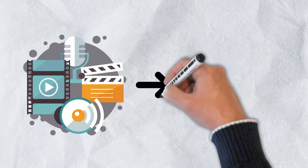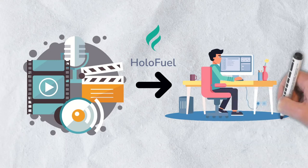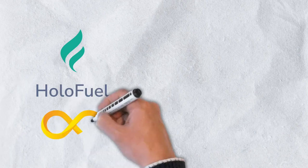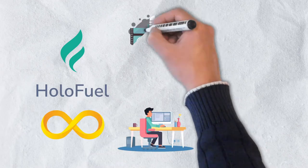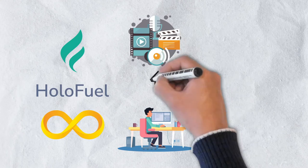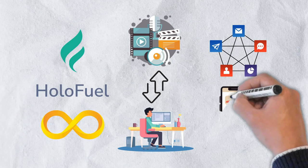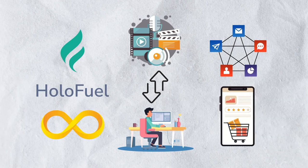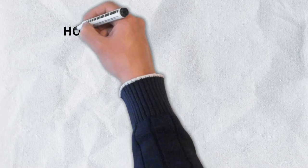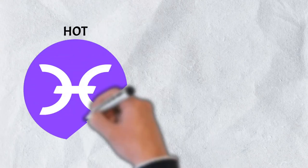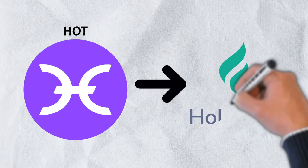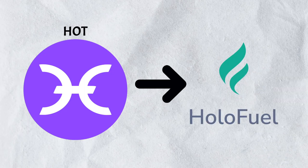HoloFuel is the native currency of the Holo platform and represents a contractual service obligation that can be redeemed for hosting. Publishers pay hosts in HoloFuel for their services, which hosts can then exchange for other currencies through reserve accounts. HoloFuel has a dynamic supply, meaning it doesn't have a cap, and it can be used as a medium of exchange between hosts and publishers for hosting HAPs. Participants can also spend HoloFuel through various apps and online marketplaces. Currently, HOT serves as a placeholder for HoloFuel and will be replaced once Holo launches in beta, at which point HOT holders can exchange their tokens for HoloFuel at a one-to-one rate.